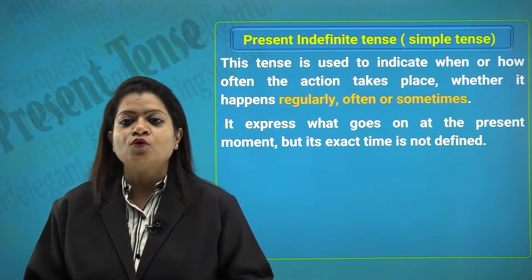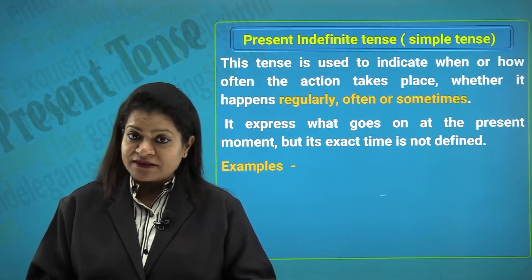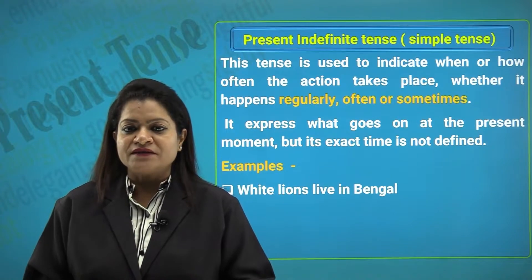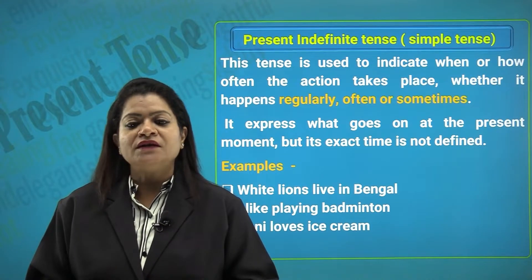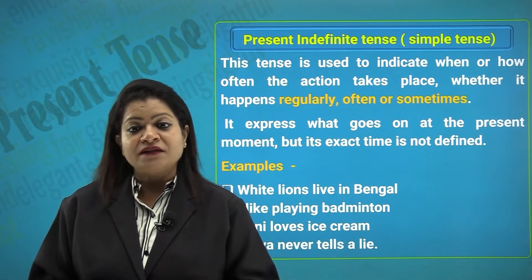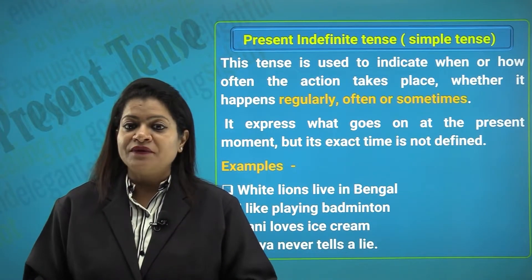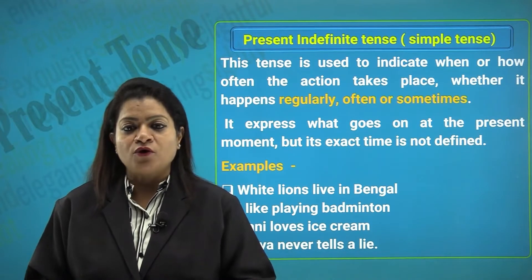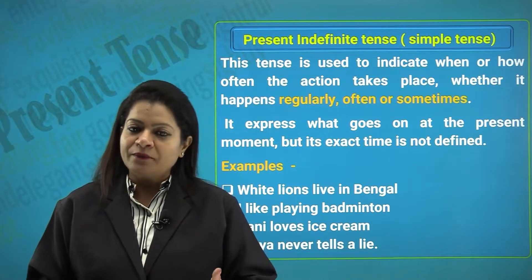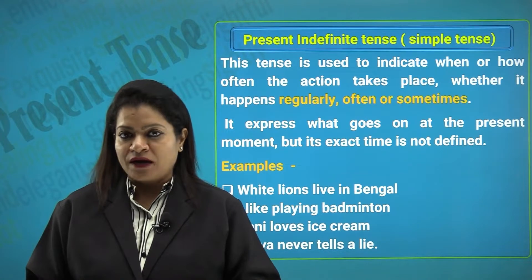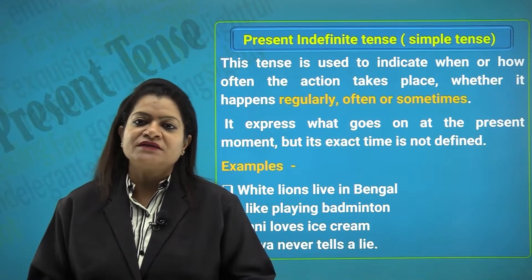The simple present tense also expresses what goes on at the present moment, but the exact time may not be defined. For example: 'White lions live in Bengal,' 'I like playing badminton,' 'Rani loves ice cream,' 'Satya never tells a lie.' In these sentences, the verb 'live' denotes a continuous action; 'loves' and 'never tells a lie' are habitual actions. So a habitual action is also denoted by the present indefinite tense — for example, 'I study every day at 5 PM.'